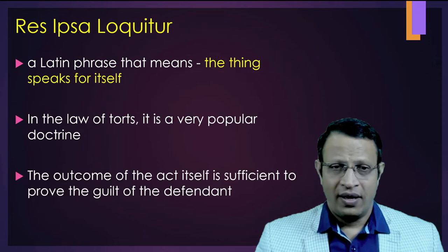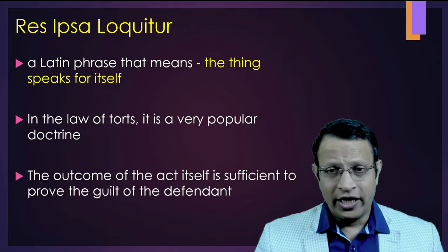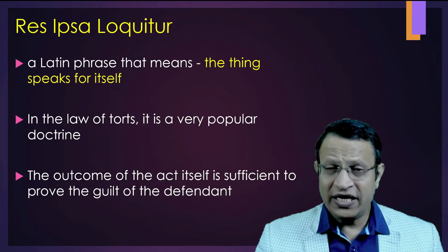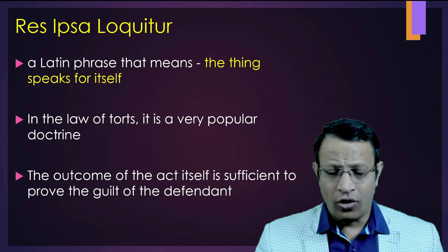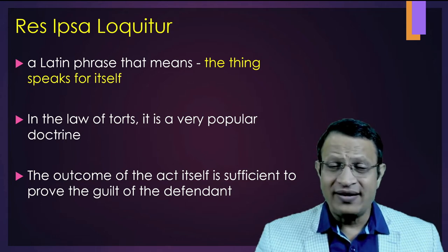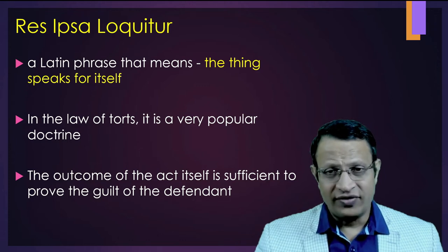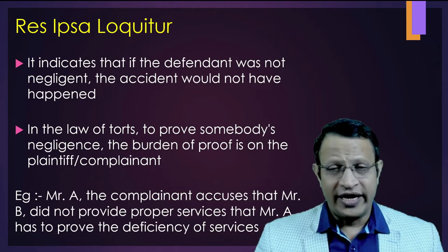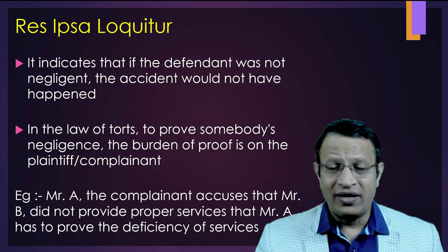Res Ipsa Loquitur is a Latin phrase meaning 'the thing speaks for itself.' In the law of tort, it is a very popular doctrine. Here the outcome of the act itself is sufficient to prove the guilt of the defendant. It indicates that if the defendant was not negligent, the accident would never have occurred.